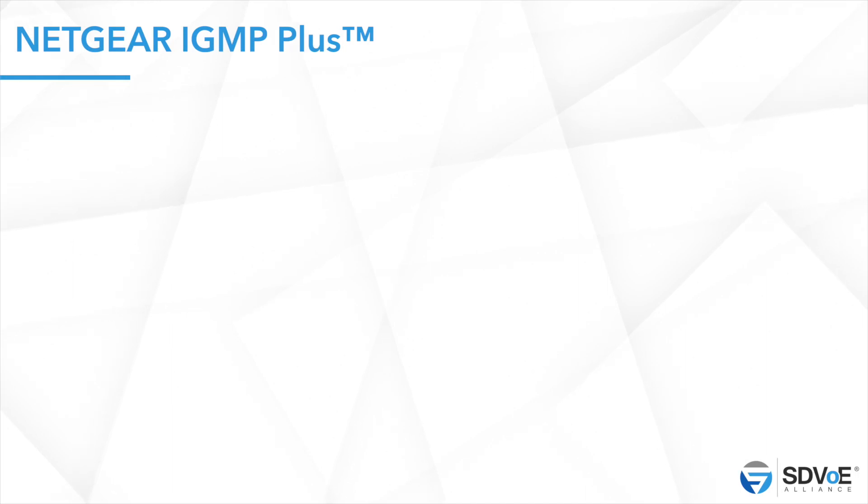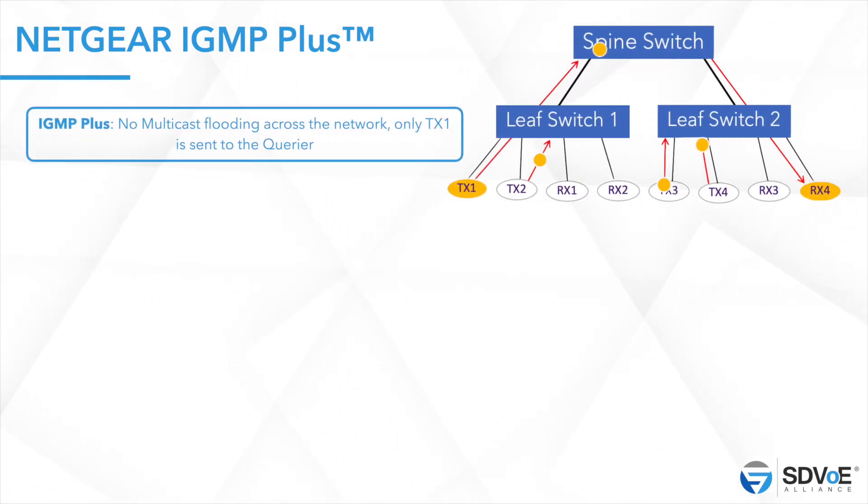With SDVoE and Netgear you're covered. Netgear understood this problem early and engineered IGMP in a backward-compatible way — IGMP+ works in the background so that multicast always stays local. You can trust your bandwidth calculations and size your uplinks accordingly. With IGMP+, if SDVoE encoders and decoders are multicasting locally and one subscriber on another switch subscribes to a stream, only that stream traverses the network — not all streams.